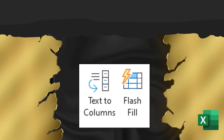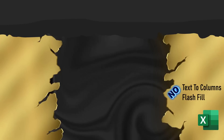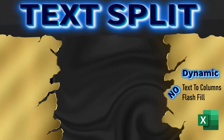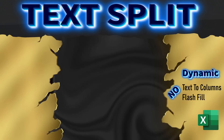For decades we have relied on text to columns, then in 2013 flash fill revolutionized the Excel workflow. While both are useful, they are static and won't update if the data changes. If you are seeking a dynamic alternative, the TEXTSPLIT function introduced in 2022 is the solution.